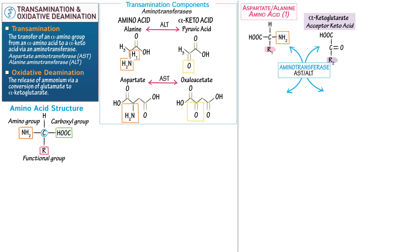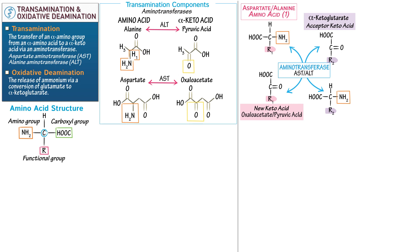Draw alpha-ketoglutarate. We see that it has a carbon backbone, a carboxyl group, a different functional R group, and a double-bonded oxygen group. When the originating amino acid loses its amino group, it becomes a new keto acid — oxaloacetate from aspartate, or pyruvic acid from alanine. We use the same highlighted R group as the originating amino acid, because the alpha-keto acid was derived from it. The other product is the new amino acid, designated as 2, which is L-glutamate — the product of the addition of the amino group to alpha-ketoglutarate.